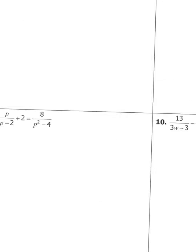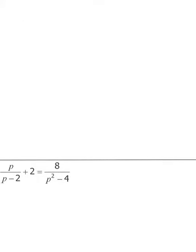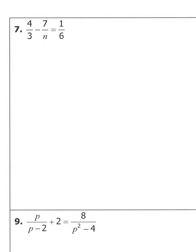Now let's look at three problems on this side of the notes. On this side you are no longer able to use method one — the proportion method where you cross multiply — because you've got three fractions. You'll have to use method two, which is finding the least common denominator. We found the LCD back in lesson 6-4, so if you need a review, go back there.